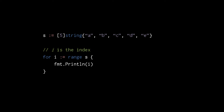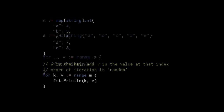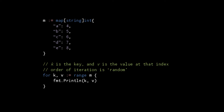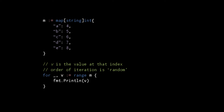If we only need the index, we can assign to just one variable. If though we want just the values, we assign to two variables but use underscore to discard the index. For range loops also work with maps. Here the variable k receives the key, and variable v receives the value. The order in which for range iterates through the key-value pairs is random, because maps do not have a sense of ordering amongst their elements. If we only want the keys, we can assign to just one variable, and if we just want the values, we assign to two variables but use underscore to discard the key.